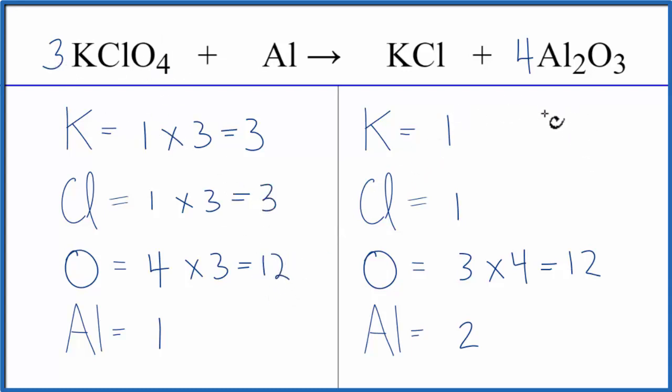and then on this side of the equation here, we have aluminums, two times the four. That gives us eight aluminum atoms, and then three times the four. We already did that with the oxygens. So the oxygens are balanced, and we're actually pretty close to balancing this equation.